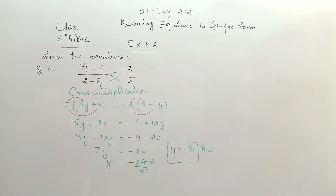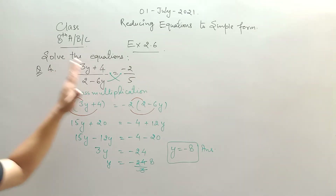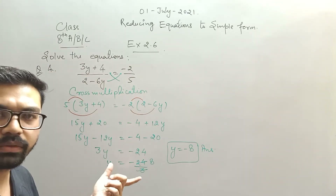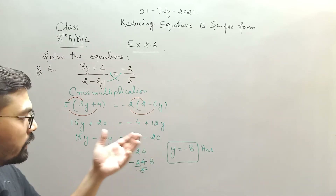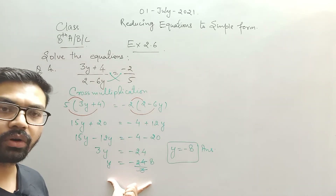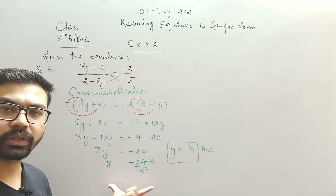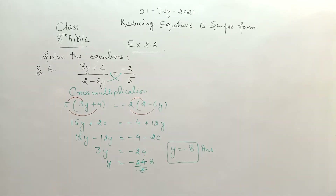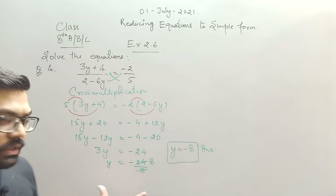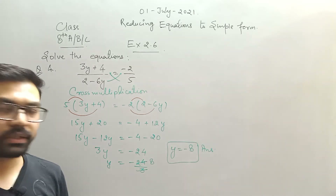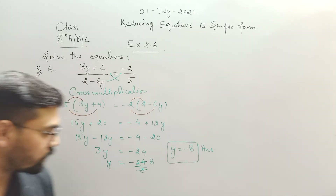So 15 minus 12 gives 3y, and this equals minus 24. So y equals minus 24 divided by 3. Since 3 eights are 24, the value of y equals minus 8. So first simplify by cross multiplying numerator and denominator, then solve for y. The value is y equals minus 8.